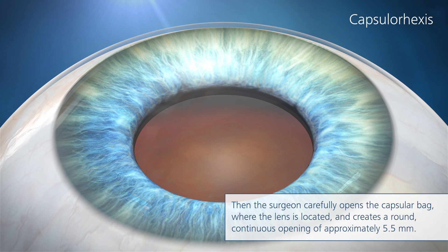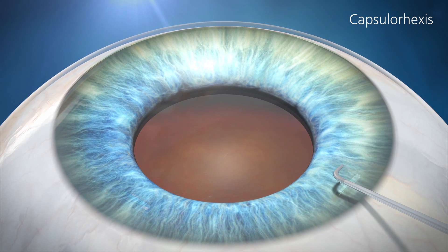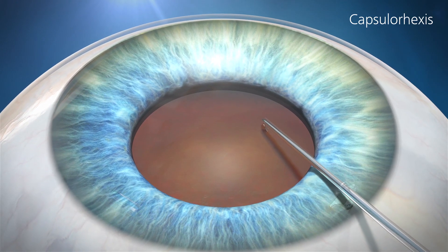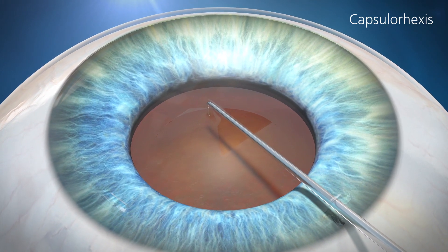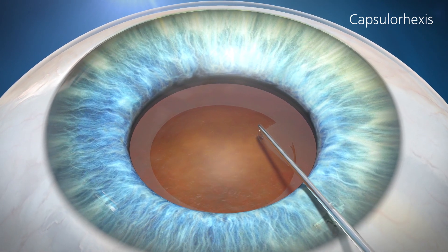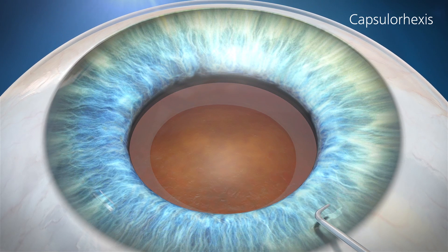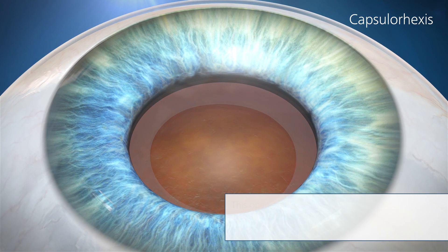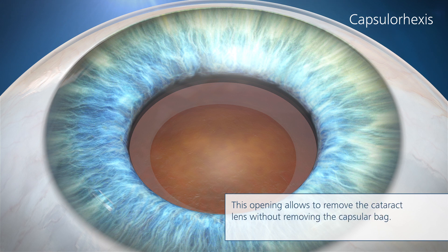Then, the surgeon carefully opens the capsular bag where the lens is located and creates a round, continuous opening of approximately 5.5 millimeters. This opening allows removal of the cataract lens without removing the capsular bag.